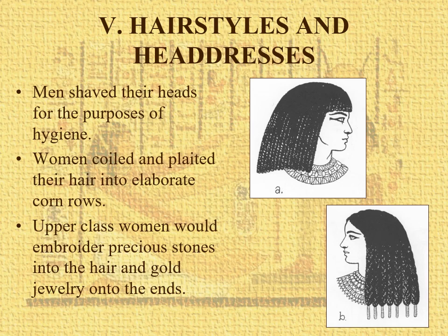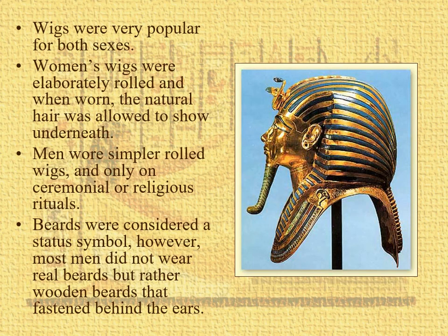So that's pretty much it — shinti for men with loin pendants and spin dots; calisiris for women with a shawl. Now, hairstyles: men shaved their heads for hygiene. Women coiled and plaited theirs into elaborate cornrows — our term, not theirs. And if you're upper class, you'd put little precious stones on the ends, which would weigh it down. Wigs were very popular, so some of these might be women's short hair with a wig.